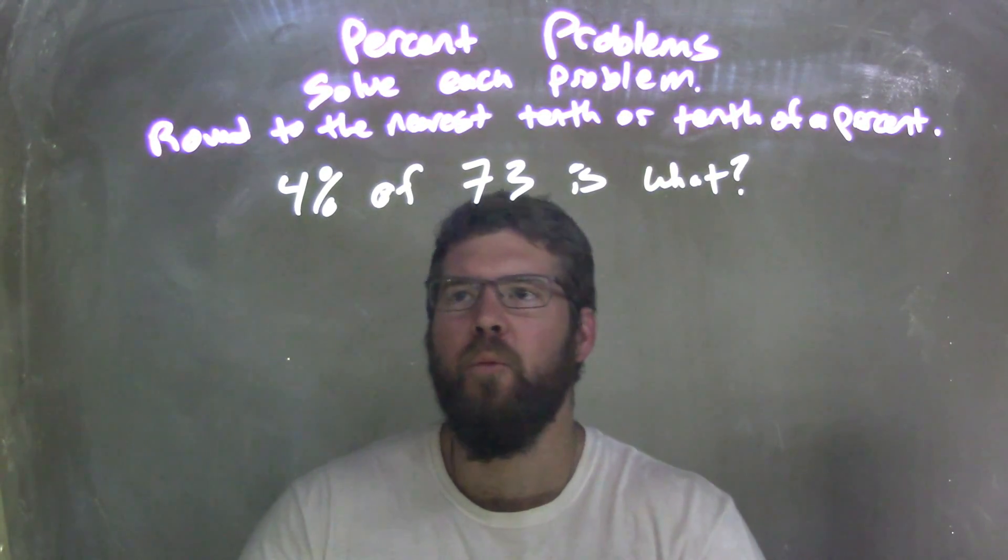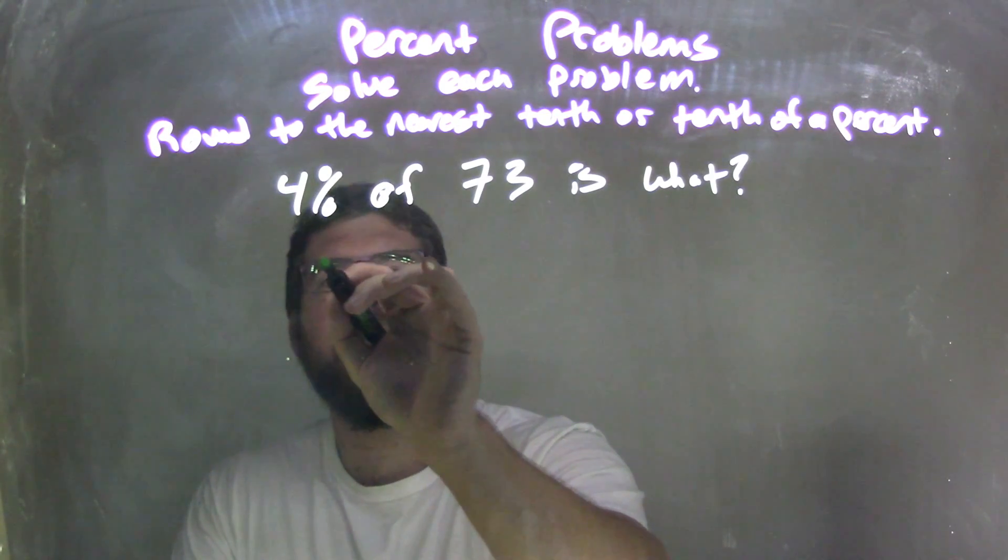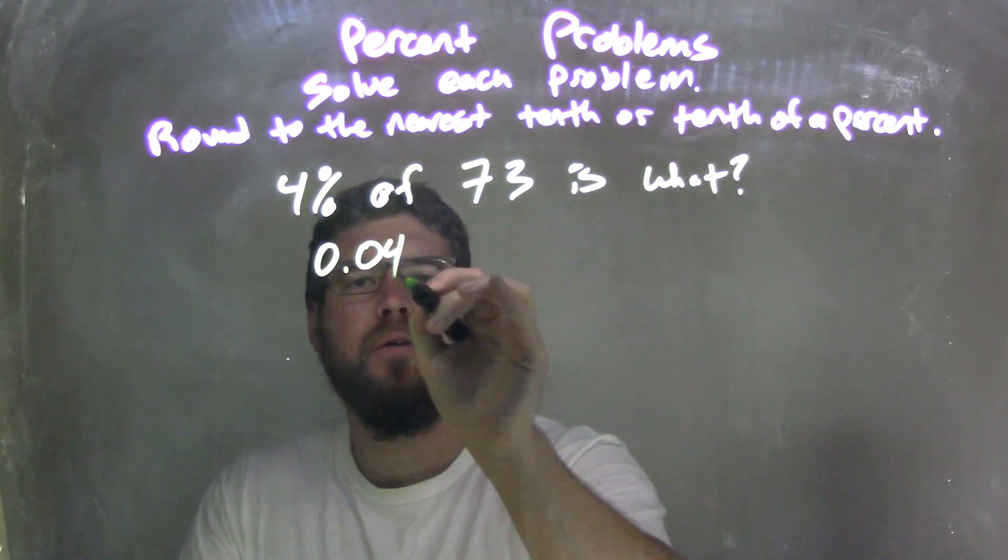So really, what I can do is write that 4% as a decimal, so 0.04. Hopefully you can do that fast.